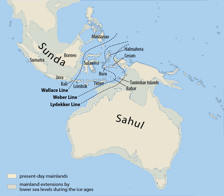Because sea level has been 30 meters or more lower throughout much of the last 800,000 years, the current state of Borneo, Java, and Sumatra as islands has been a relatively rare occurrence throughout the Pleistocene. In contrast, sea level was higher during the Late Pliocene, and the exposed area of Sundaland was smaller than what is observed at present. During the last glacial maximum, sea level fell by approximately 120 meters, and the entire Sunda shelf was exposed.